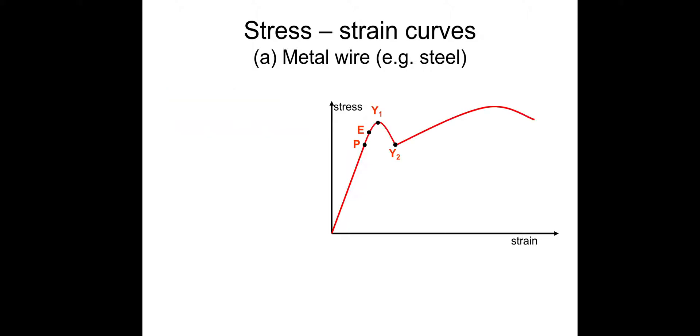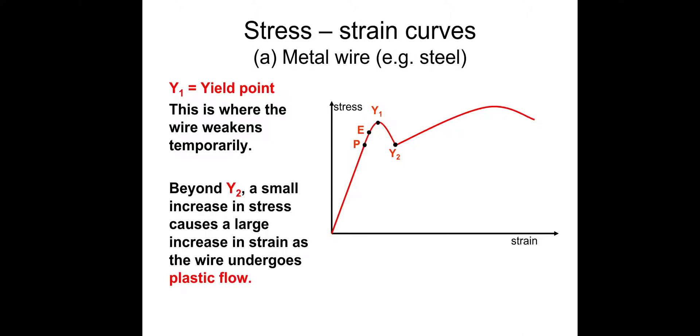In the exam, the Y1 and Y2 can essentially be the same point. So you might get curves that look like this instead. Y1 and Y2 in this instance is simply exaggerated. So you've got a yield point. This is where the wire weakens temporarily. And then beyond the second yield point, a small increase in stress causes a large increase in strain as the wire undergoes plastic flow.